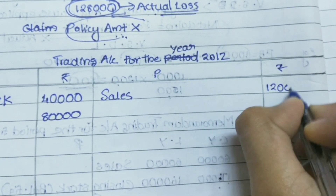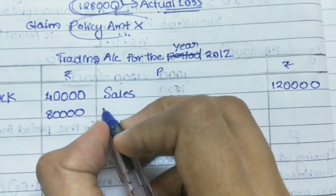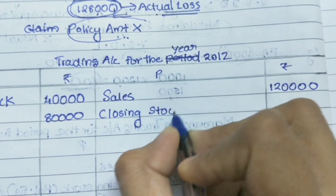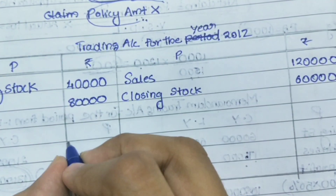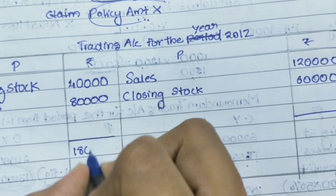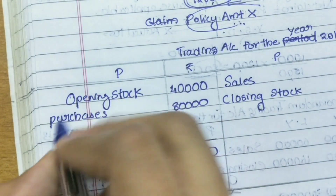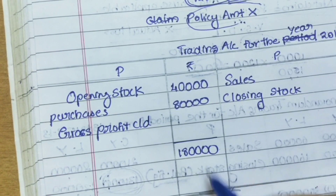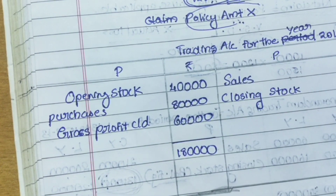Next, sales for 2012 are 1,20,000. They have also provided closing stock — the closing stock of 2012, which is the opening stock of 2013 — equal to 60,000. Now we have all the figures. After balancing, you get 1,80,000 on both sides, and the balancing figure on the debit side is gross profit, which comes to 60,000.